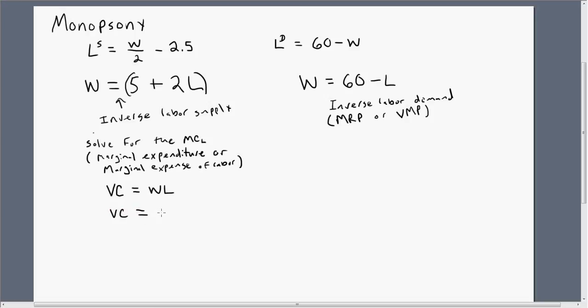So variable cost equals 5 plus 2L, and that's all multiplied through by L. So just simplifying, we've got an equation for the variable cost, VC equals 5L plus 2L squared.